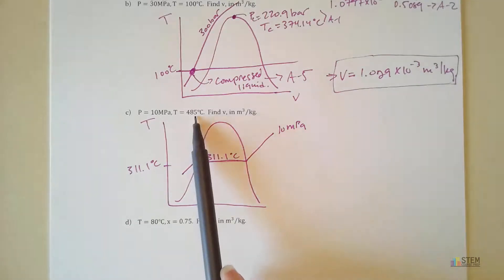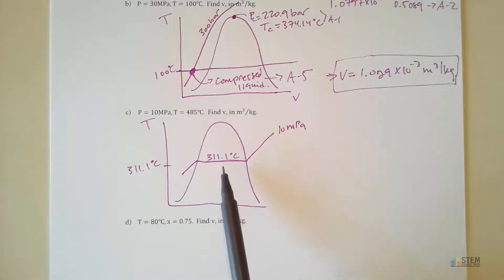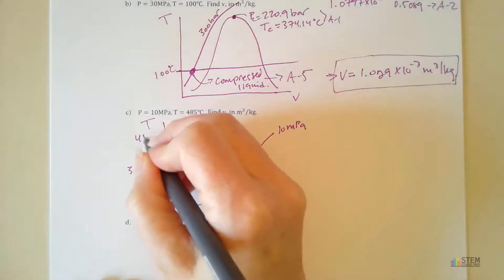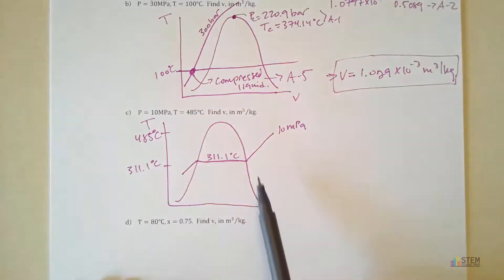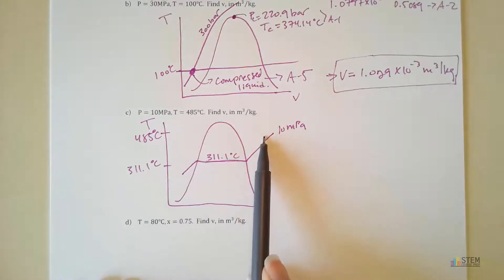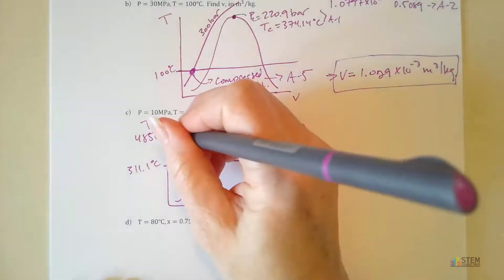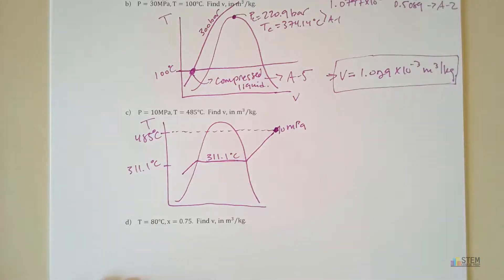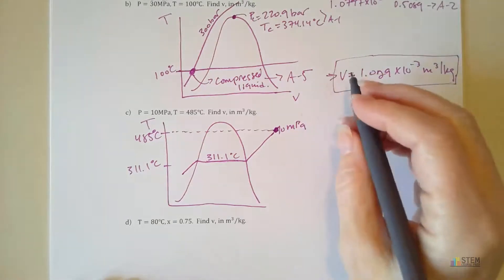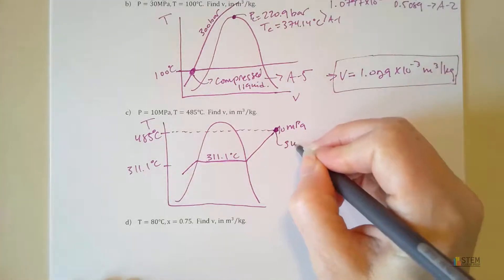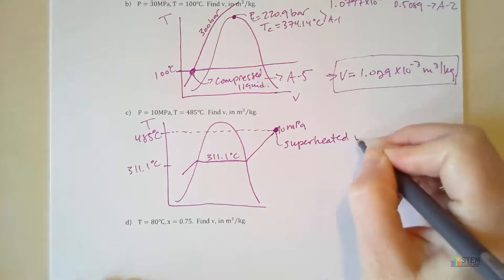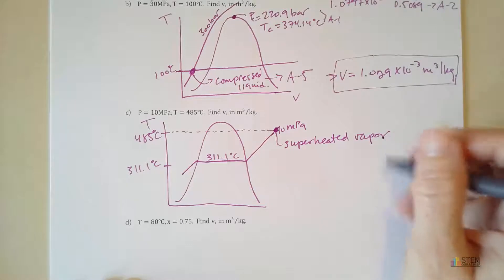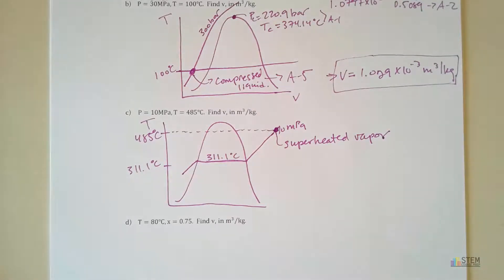Our given temperature is 485°C, which is higher than 311.1°C, so we're above and to the right on the diagram. Finding the intersection of T=485°C and P=10 MPa places us to the right of the vapor dome. That means we have superheated vapor, so we go to the superheated vapor table — Table A4 — to find the specific volume.